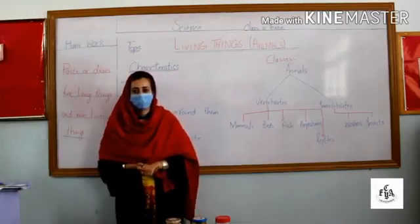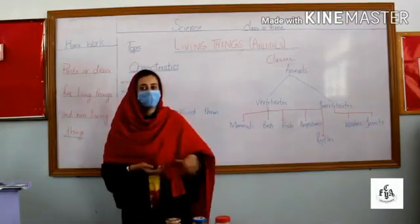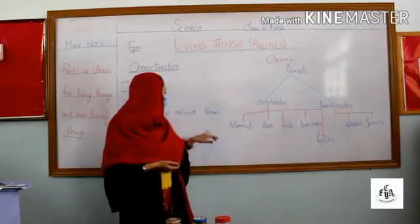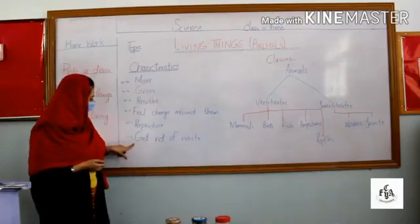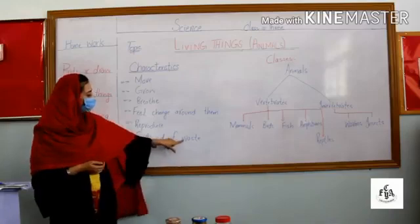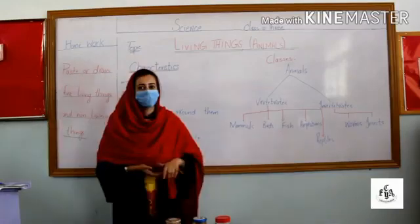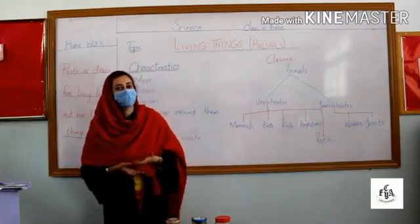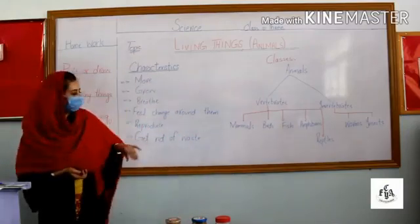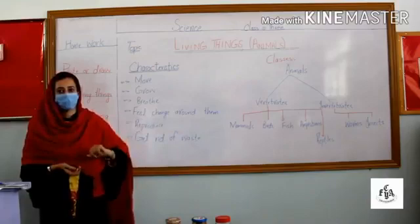Number four: living things can reproduce — living things have babies. Next, living things can get rid of waste. After eating food, through the process of digestion, they can get rid of waste products from their body.